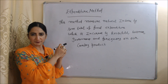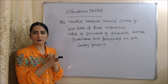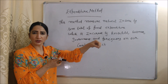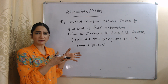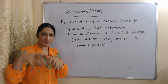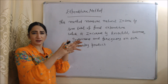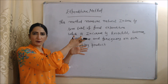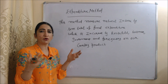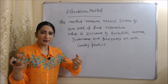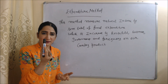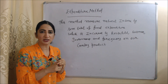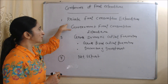The next method of calculating national income is the Expenditure Method. According to this method, we can measure national income by summing the total of final expenditure incurred by households, businesses, government, and foreigners on our country's products. Expenditure of someone is income of someone else — for example, this marker is my expenditure but the income of the shopkeeper. So through expenditure we want to know the national income of our country.